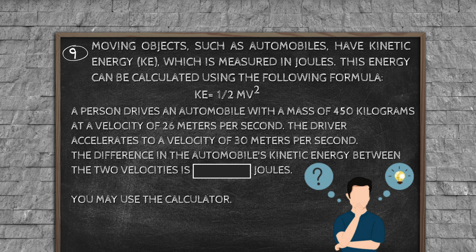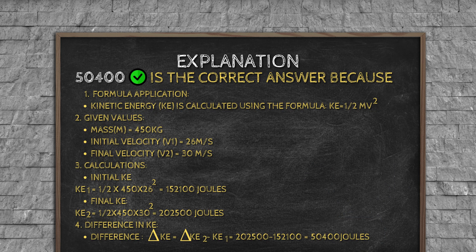Question number 9: Moving objects, such as automobiles, have kinetic energy (K), which is measured in joules. This energy can be calculated using the following formula. A person drives an automobile with a mass of 450 kilograms at a velocity of 26 meters per second. The driver accelerates to a velocity of 30 meters per second. The difference in the automobile's kinetic energy between the two velocities is how many joules? You may use the calculator.